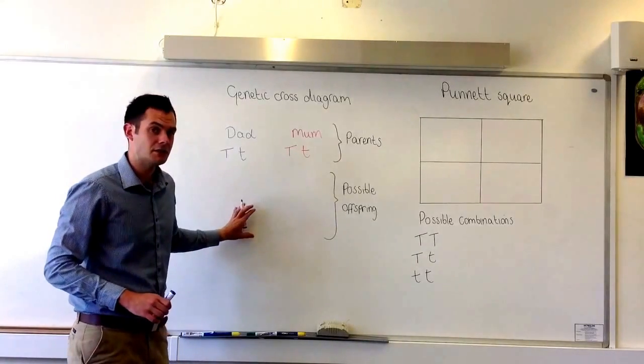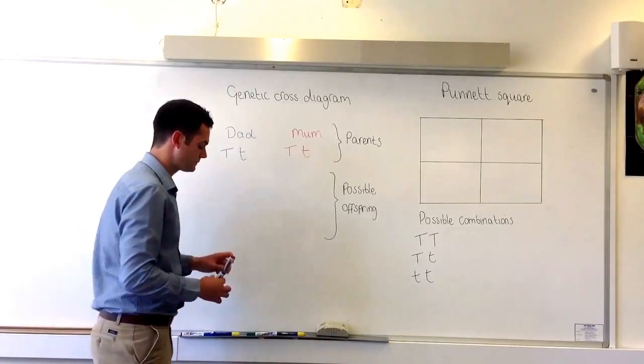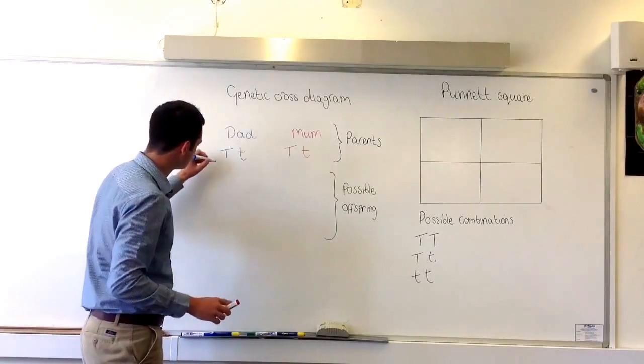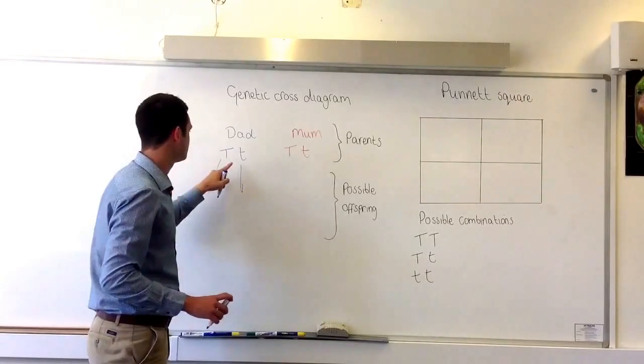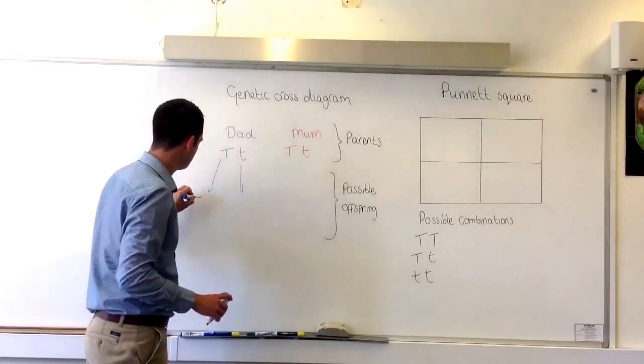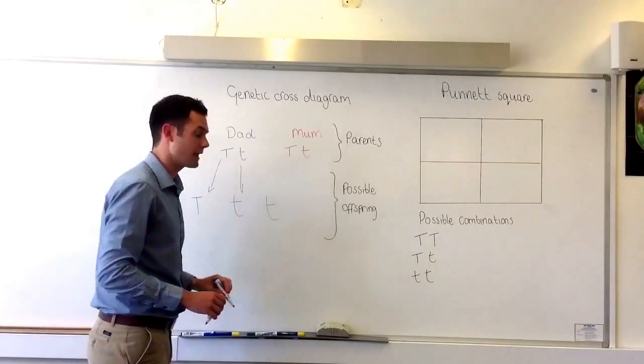How would we put this information to show the potential combinations that the offspring could have? Start by drawing the dad's potential genes. We have T, T and then lowercase t, lowercase t.